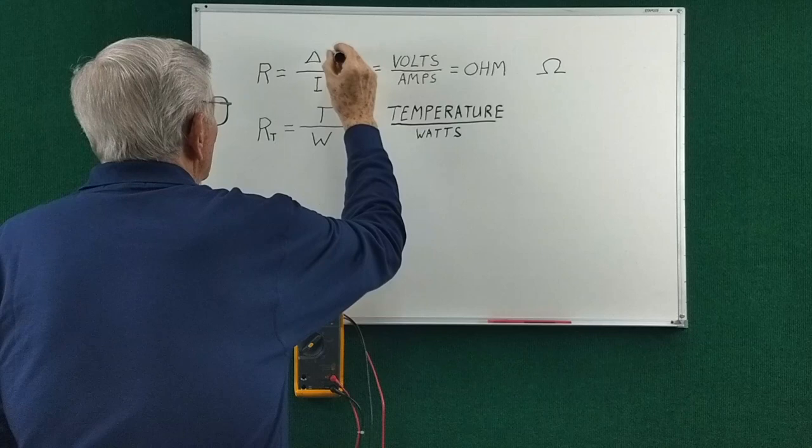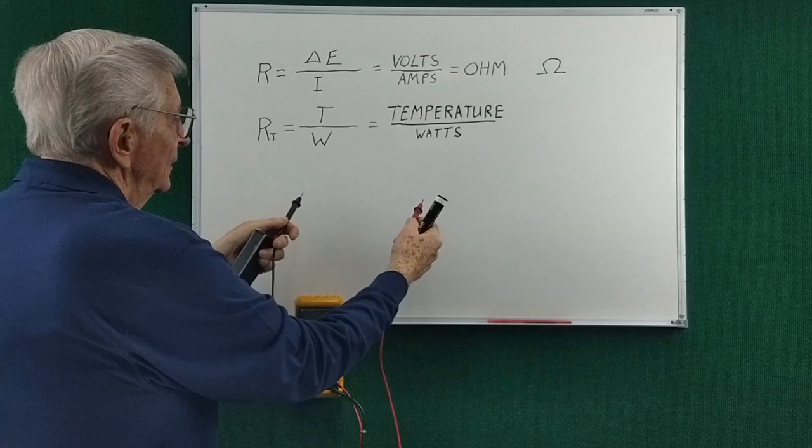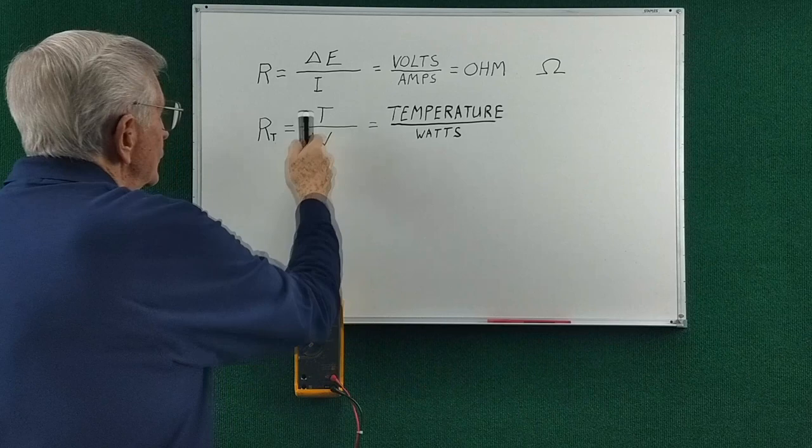We have a voltmeter here. We're always measuring a voltage between two points. So that's a delta voltage. And the same is true here. This is a delta temperature.